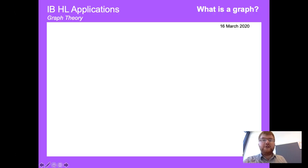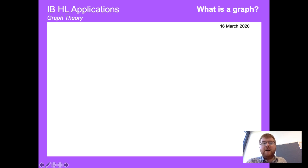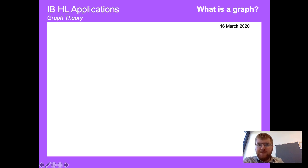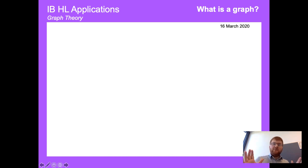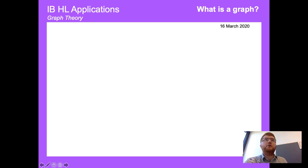Welcome to another Ginger Mathematician video. I'm going to go through the start of the IB Higher Level Applications topic on graph theory — basic definitions, what a path is, what a cycle is, what kinds of cycles there are, looking at weighted graphs, and then adjacency matrices right at the end. It's a whistle-stop tour through all the language used in graph theory.